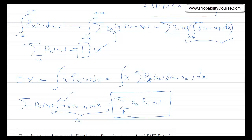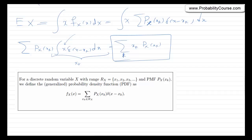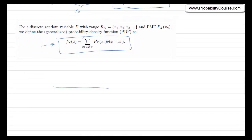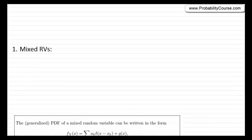So what we have done here: we introduced this delta function, and using that, we introduced a kind of PDF for discrete random variables. From now on, we can use PDF for discrete and continuous random variables. And because we can use it for both, we can extend it to mixed random variables. To summarize, for discrete random variables the PDF has this delta function form, and now let's talk about the scenario where we have a mixed random variable and see how we can use the generalized PDF.